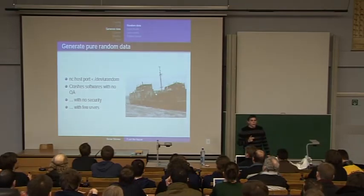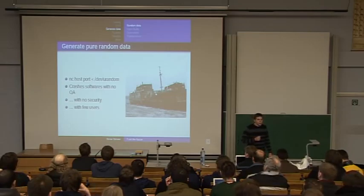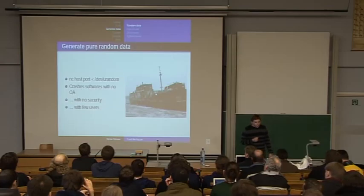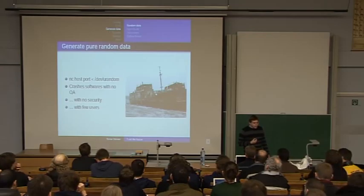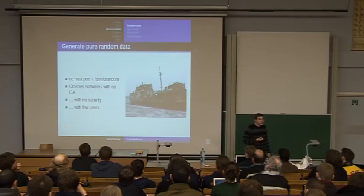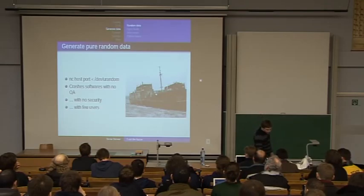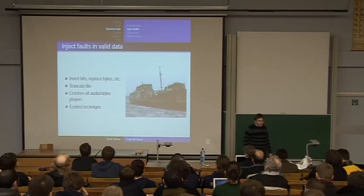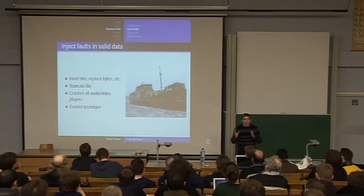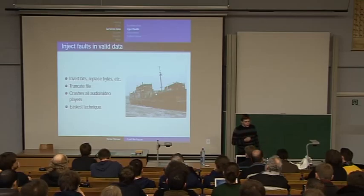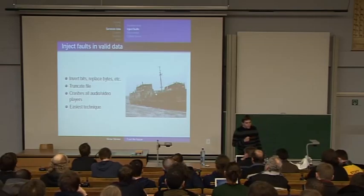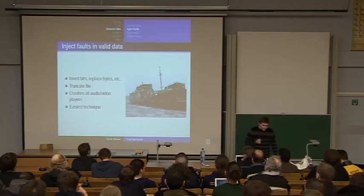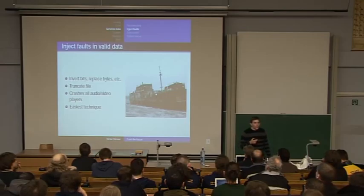In Fusi, we use three different types of data generation. The first and most simple technique is to generate pure random data, like the example with Netcat. But this technique only works on software with no security and very few users. So in Fusi we prefer to inject false invalid data — you take a JPEG picture, or a movie, or any file, and replace some bytes, invert bits, or truncate the file. This technique is very efficient because all video players crash, and it's also the easiest technique.